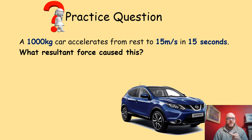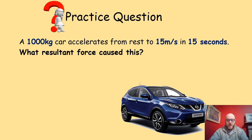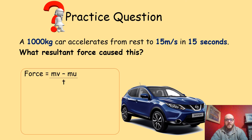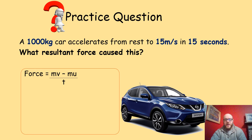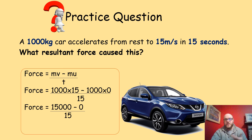Now it's your turn. This 1,000 kilogram Nissan accelerates from rest to 15 meters per second in 15 seconds. What is the resultant force? Pause the video. Welcome back. Using SROE: force equals mv minus mu over t. Final velocity is 15 m/s, mass is 1,000 kg, initial velocity is zero. Substituting: force equals (1,000×15 minus 1,000×0) divided by 15 = 15,000 minus zero divided by 15 = 1,000 newtons.